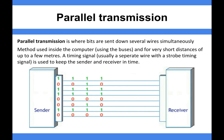Parallel transmission, on the other hand, is where bits are sent down several wires at the same time. This is a method commonly used inside the computer using things like buses, and it's good for very short distances of up to a few meters. A timing signal, which is usually a separate wire, is used to keep things in time — commonly a strobe timing signal or something like the clock signal.